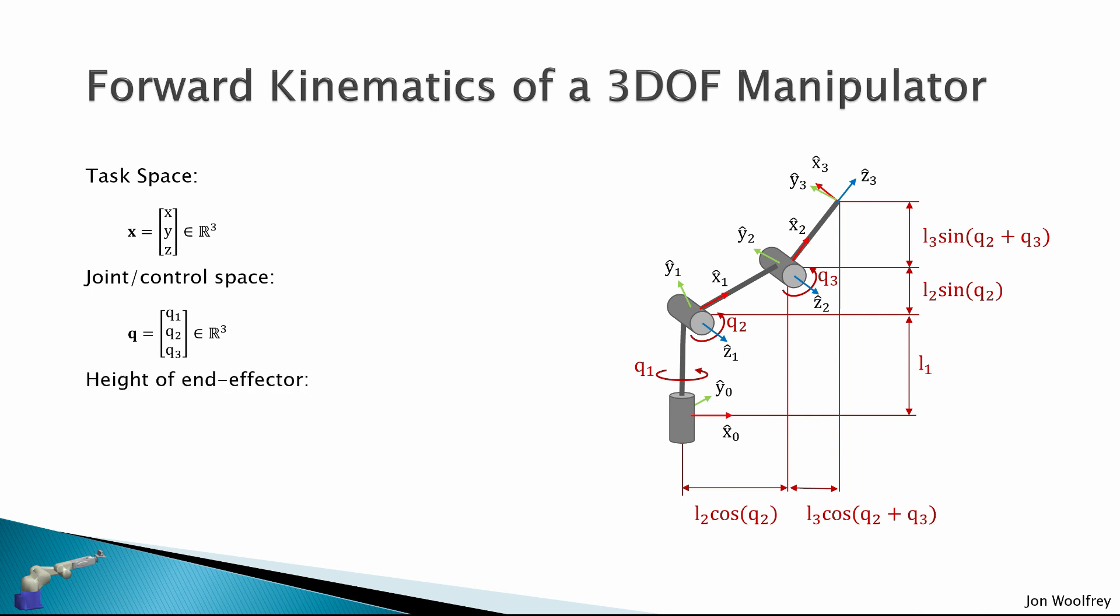So the height of the end effector will be the Z direction, which is L1 plus L2 sin Q2 plus L3 sin(Q2 plus Q3), here. And then we also need to consider the distance of the end effector projected on the XY plane. So we're projecting on this plane here. And this is given by L2 cos Q2 plus L3 cos(Q2 plus Q3).